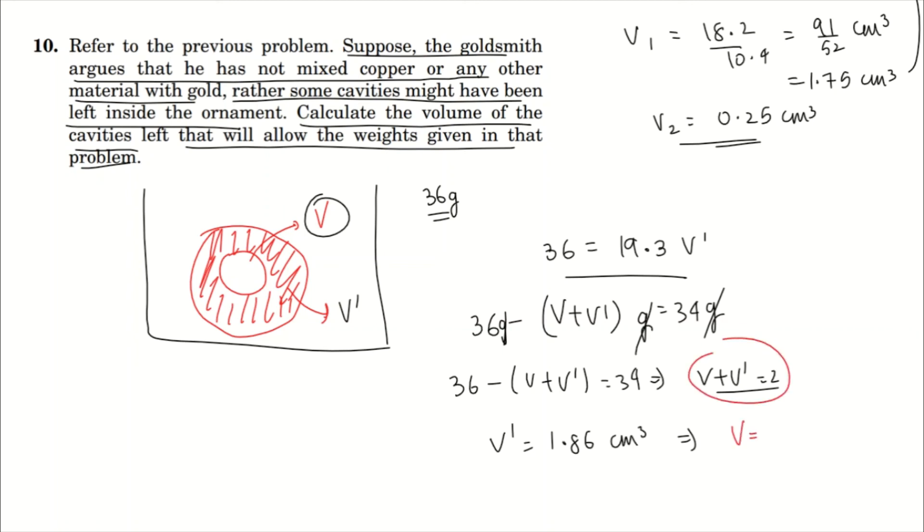We will get that the volume of the cavity V is equal to 2 minus 1.86. This just gives you 0.14 cm³. So this much will be the cavity volume if there is no mixing, if there is no impurity in the ornament.